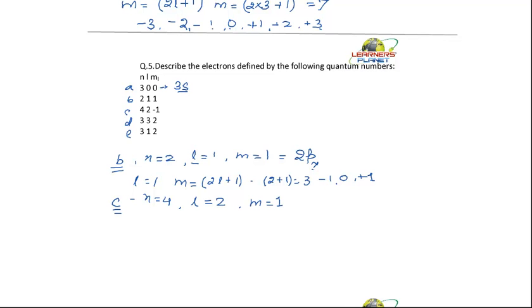Now, when N is 4, so to which energy level is it present? The electron is present in which energy level? It is present in the 4th energy level. L is 2. So, L is 2 for D subshell. And it is present in which orbital? For L is equal to 2, how many orbitals are there? What are the M values? M will have how many values?